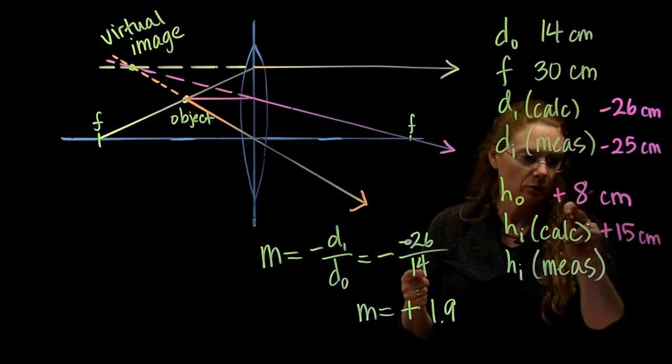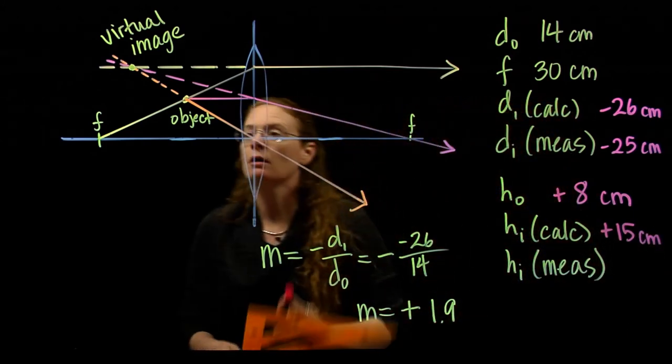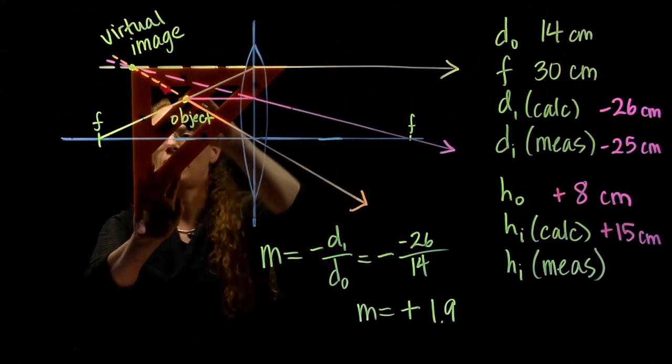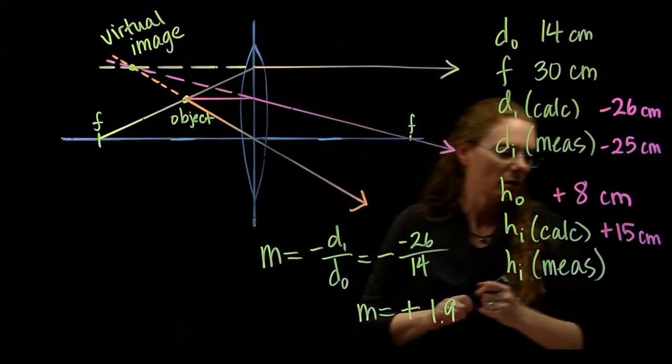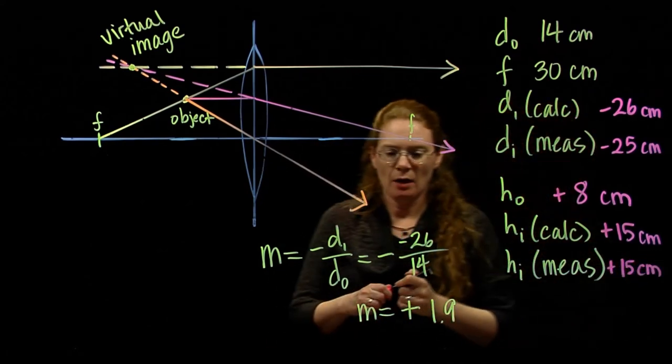Let's measure it and see how tall it is. So from here to here, I get 15 centimeters. Ha ha, perfect. Good, good, good. Okay, so here we have a virtual image from a converging lens.